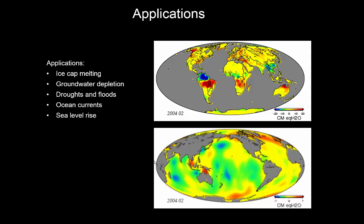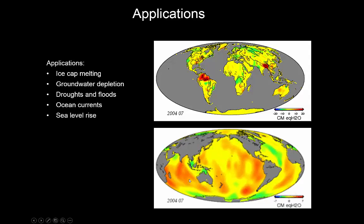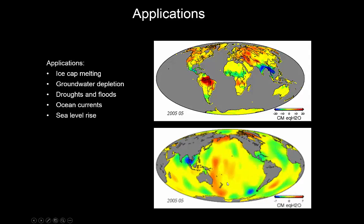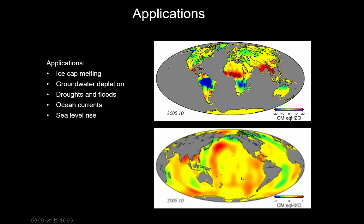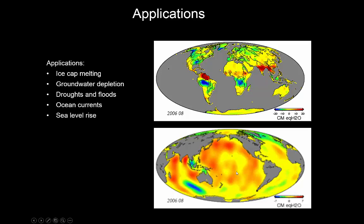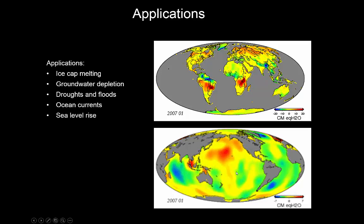We can see an awful lot more than we could before with only electromagnetic methods. The main disadvantage is the coarse resolution — as you can see, it's all a fairly blurry image — but the GRACE satellites have taught us an enormous amount about the Earth.